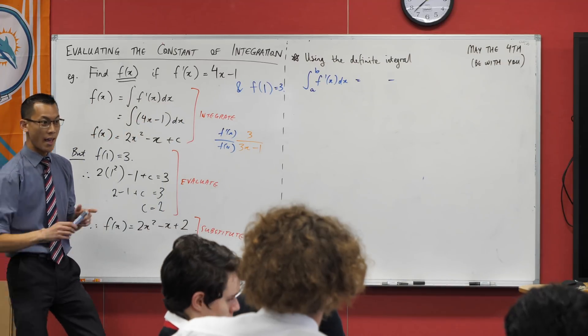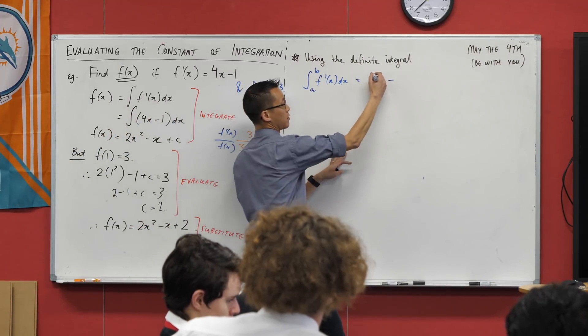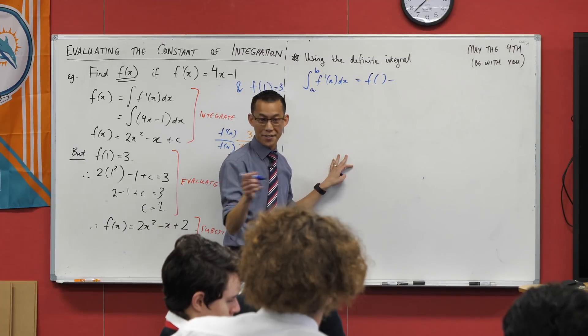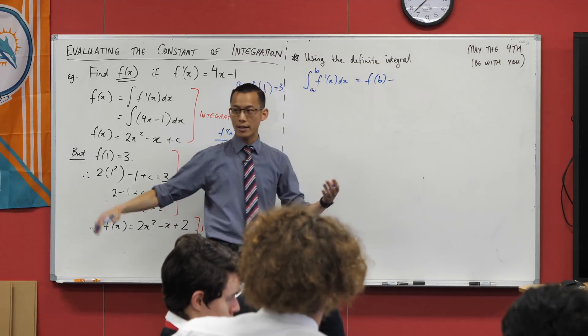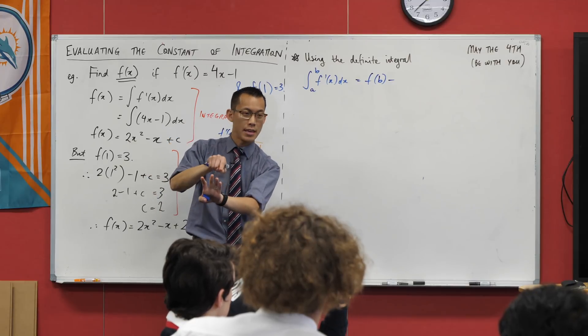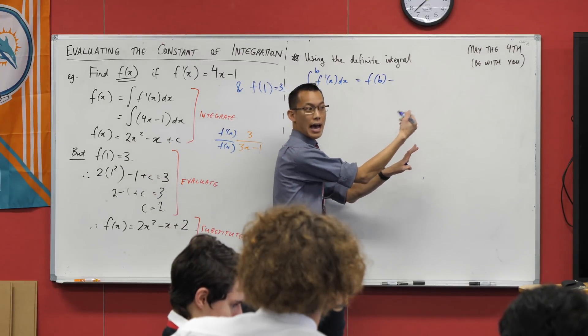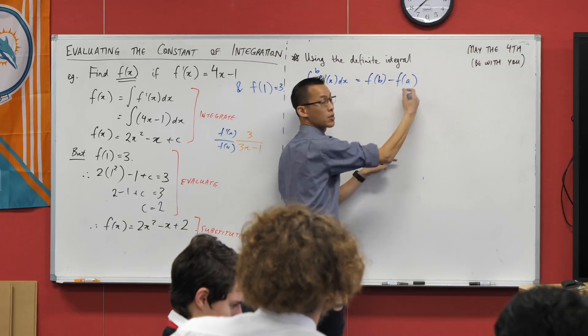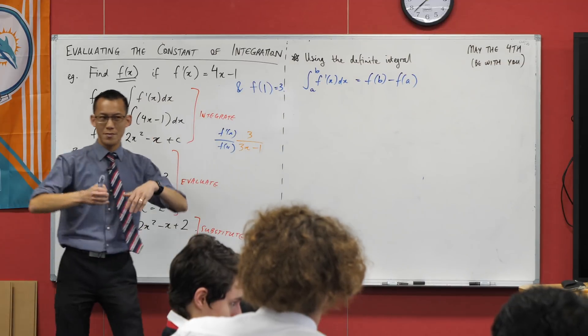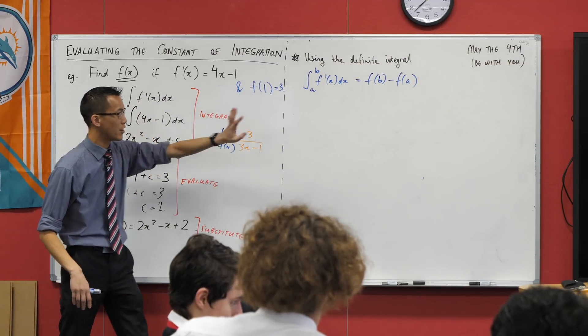F of, yeah, f of something. Very good. The upper bound—we evaluate, we integrate, and then we evaluate that thing at the upper bound, and then we evaluate it at the lower bound. So f of a, right?